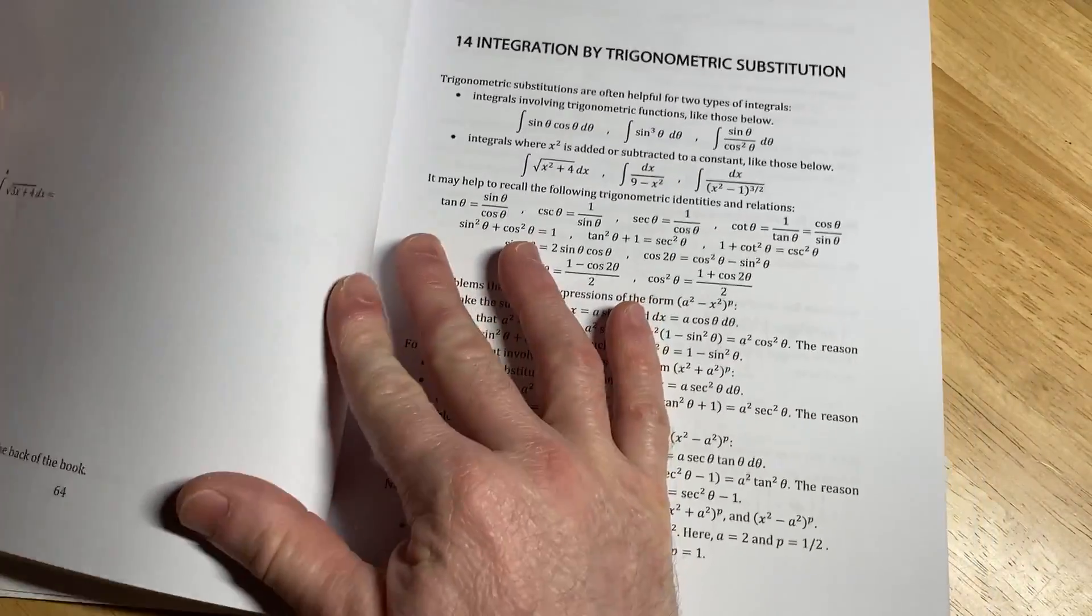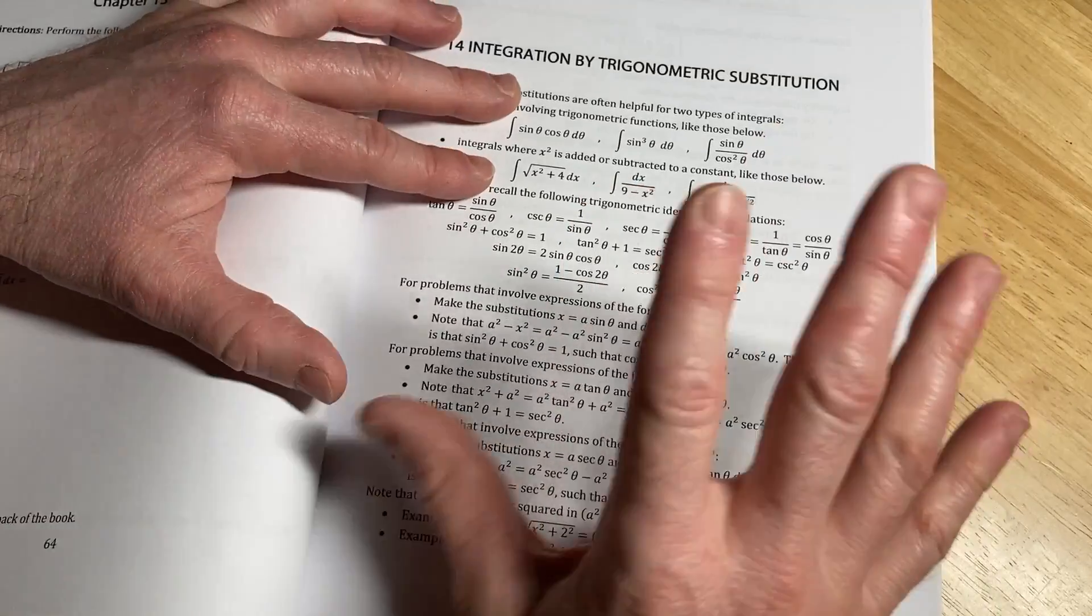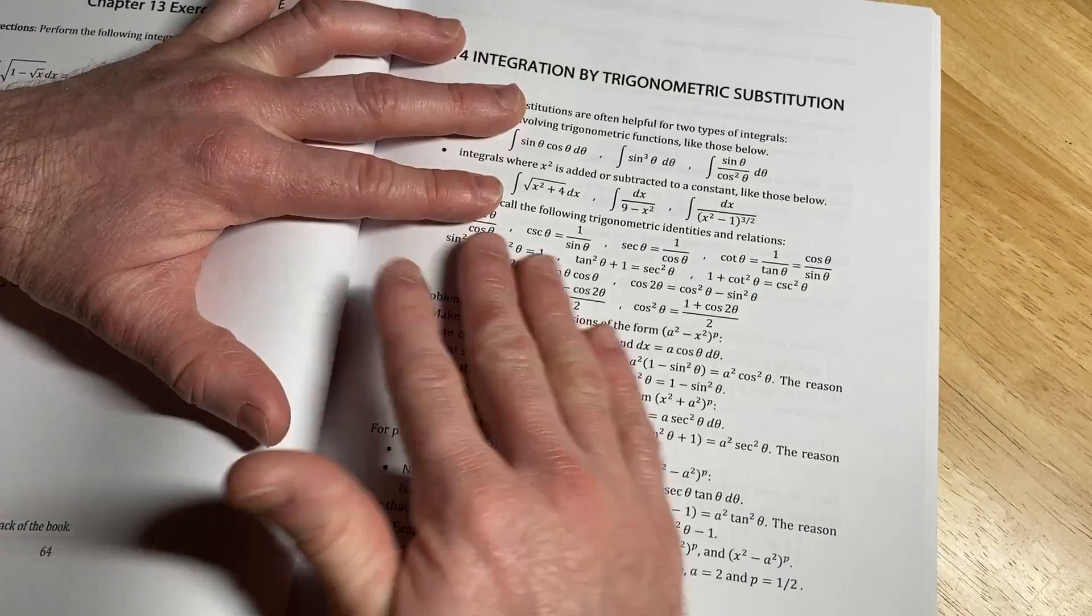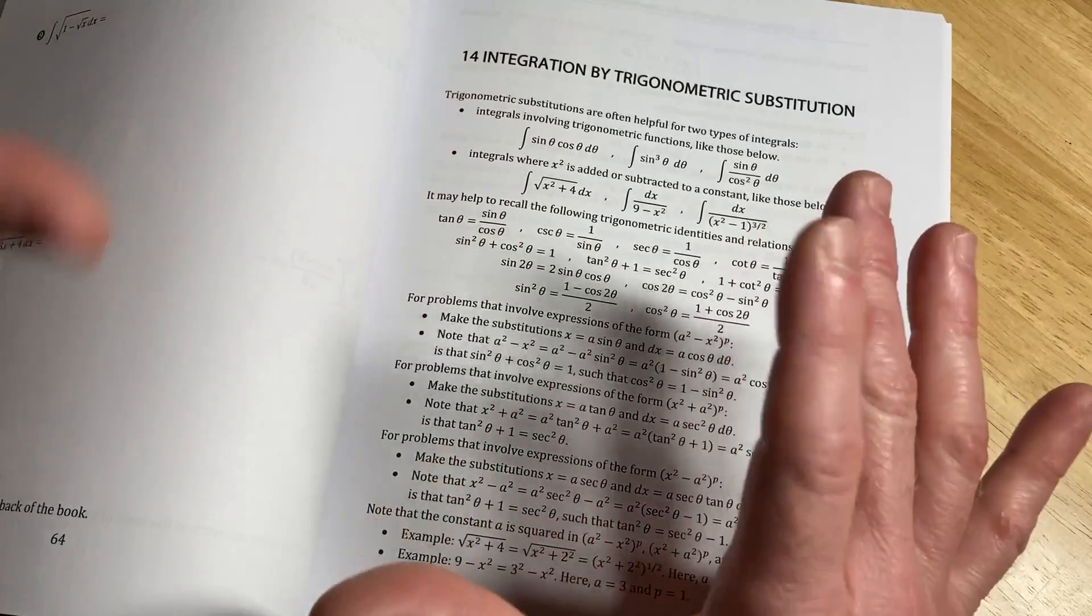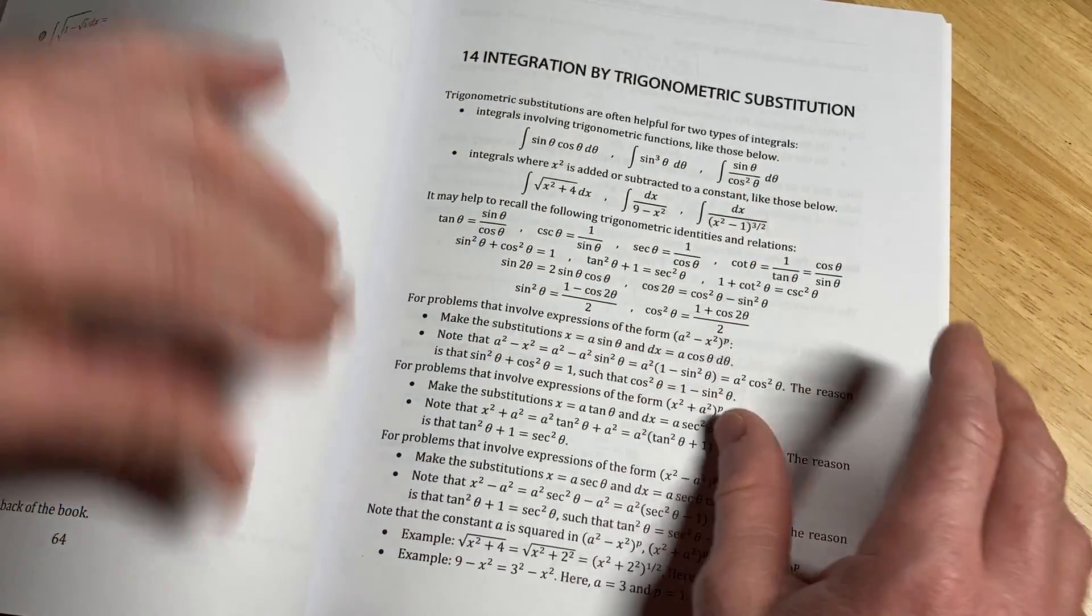So calc 1, 2, 3. So it contains topics from three different courses from the full calculus sequence. You're going to get some topics, not everything, just some specific topics.